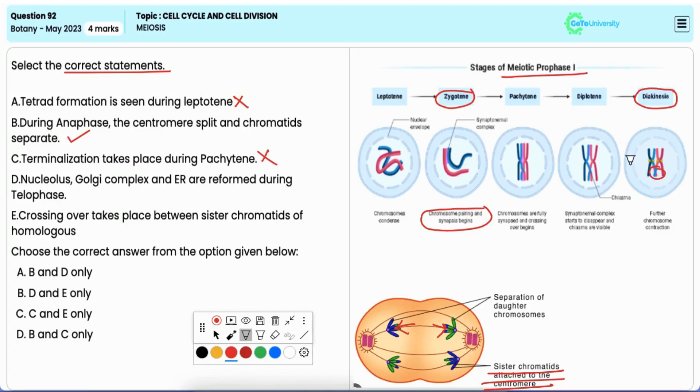Statement D: nucleolus, golgi complex, and ER are reformed during telophase. It is correct. During telophase the nuclear envelope reforms and organelles such as the nucleolus, golgi complex, and endoplasmic reticulum (ER) begin to reappear as the cell prepares to complete division.